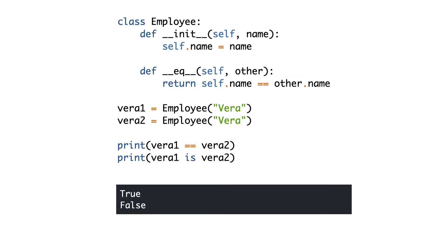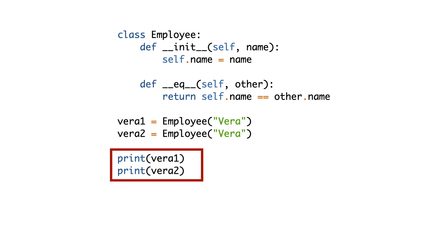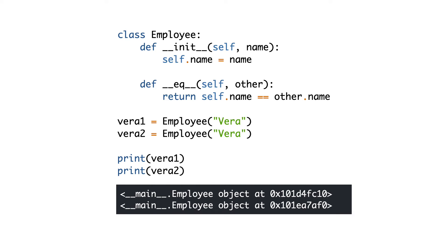Equality now does what is expected. So what does the identity check do? Here is the same code as before, but this time I print the objects. Python prints the objects, but since we did not implement dunder string, Python prints the object identities. So now you also know the meaning of those strange addresses. Look at the addresses — they are different. This is why the 'is' keyword, or better said, the identity comparison, returned false.